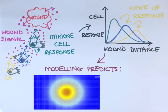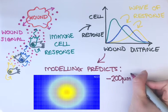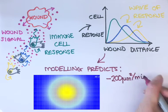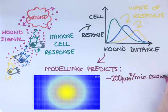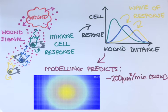We've found that the wound attractant diffuses out from the wounded tissue quite slowly, at a rate of 200 micrometres squared per minute. This is probably too slow for the attractant to be a small molecule such as ATP and hydrogen peroxide. The signal measured in our study is probably a larger molecule, such as a lipid or a protein.